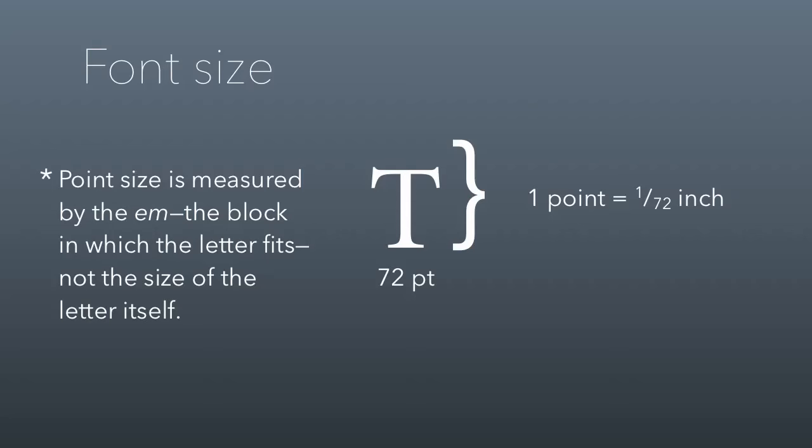You can't always assume that 12-point letters are the same size across every font. The em is the same size for all fonts at a given point size, but the font designer used a different amount of space within the em for each letter. What is consistent is the size of the em — the convention now is that a 72-point em is one inch tall, so each point is equivalent to 1/72nd of an inch.